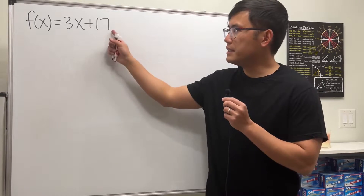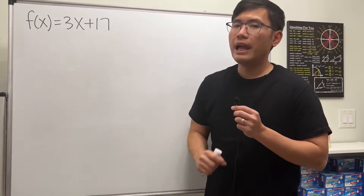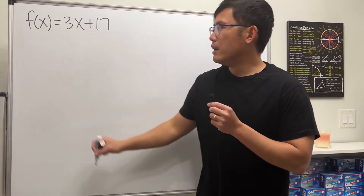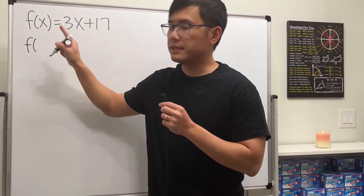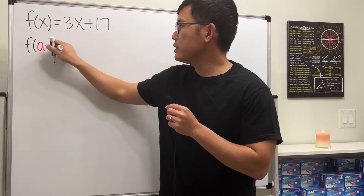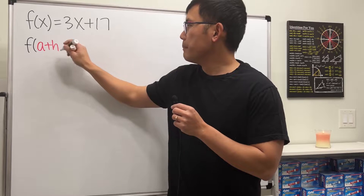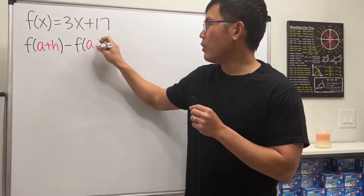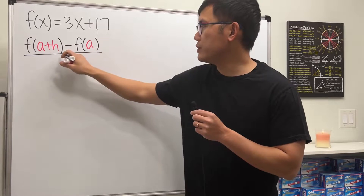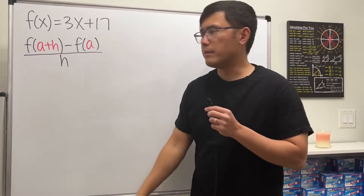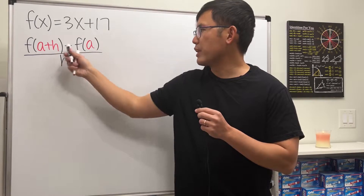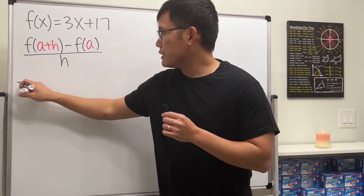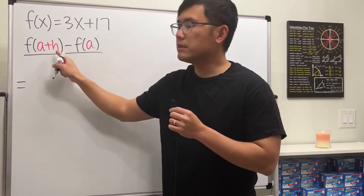Find the difference quotient of this linear function, and later I'll give more examples. First, we have to remember that the difference quotient is f(a+h) minus f(a), all over h. Some people might use x here instead of a — that's okay too.